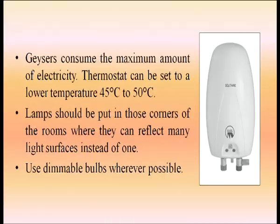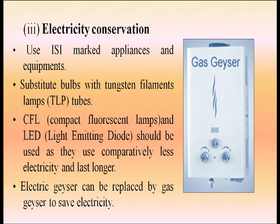Turning off your TV instead of leaving it on standby can save 70 kilowatt-hours per year. Geysers consume the maximum amount of electricity — thermostats can be set to a lower temperature of 45°C to 50°C. Place lamps in corners of rooms where they can reflect light off multiple surfaces. Use dimmable bulbs whenever possible. Use ISI-marked appliances, replace tungsten filament bulbs with CFLs and LEDs, which use less electricity and last longer. Electric geysers can be replaced by gas geysers to save energy. Adjust cooking gas flames to stay blue, not red or yellow, and shut down computers when not in use.